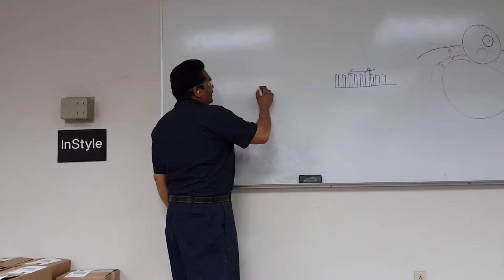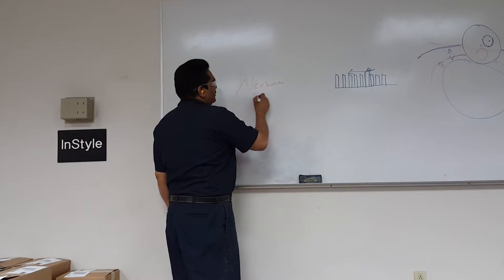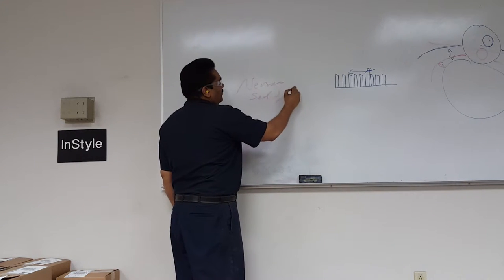So basically this is how the neuron is - the neuron cell of the brain.